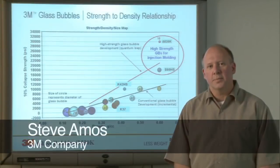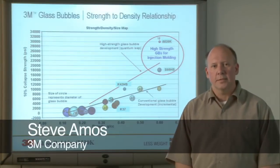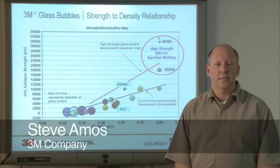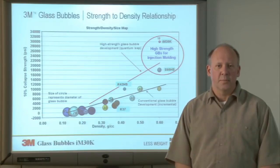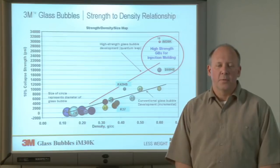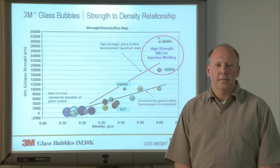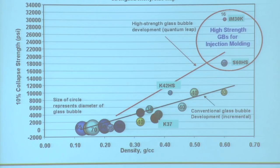3M makes many different glass bubble products. This is a graph showing the strength to density of the product lines that we make. You can see the strength on the y-axis and the density on the x-axis. The size of the circle represents the average particle size of the bubble, and each circle is a different grade of glass bubble that we make.